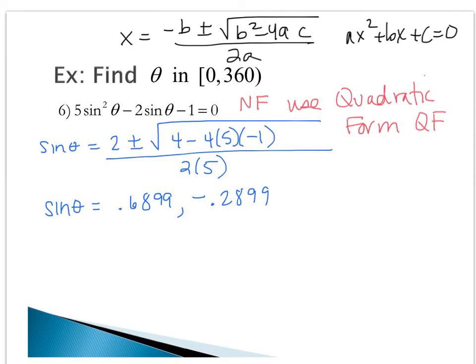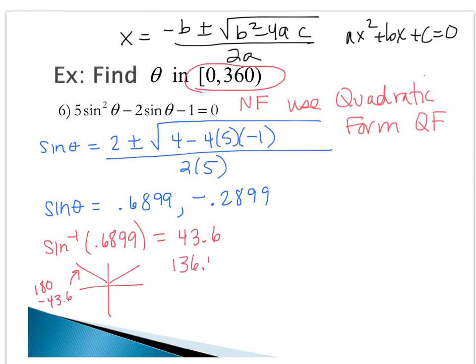I need to do sine inverse for both of those values. We want our angles to be in 0 to 360, so make sure you reset your calculator to degrees. We will do the sine inverse of 0.6899 and get 43.6. We want all angles in the circle that have this sine ratio. Sine is positive in quadrant 1 and quadrant 2, so we do 180 minus 43.6, giving me 136.4 degrees.